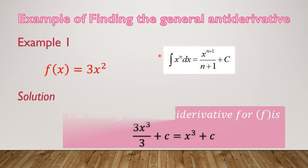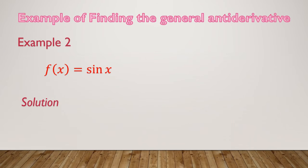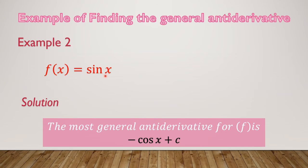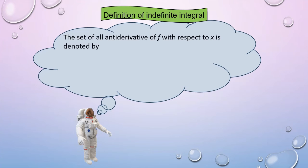Proceeding with the solution: when we integrate 3x squared, we get 3x cubed over 3 plus C, which simplifies to the final answer x cubed plus C. Example 2: the function f equals sin x. The antiderivative of sin x is negative cos x, so the final answer is negative cos x plus C.